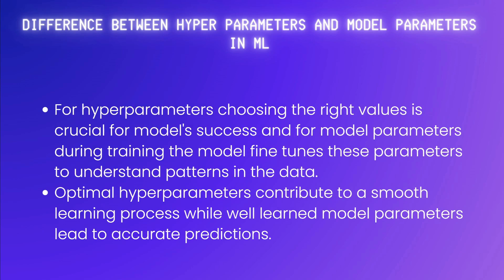When it comes to the role of these parameters: for hyperparameters, choosing the right values is crucial for model success. For model parameters, during training the model fine-tunes these to understand the patterns in the data. When it comes to impact, optimal hyperparameters contribute to a smooth learning process, while well-learned model parameters lead to accurate predictions. This is all about hyperparameters and model parameters in ML.